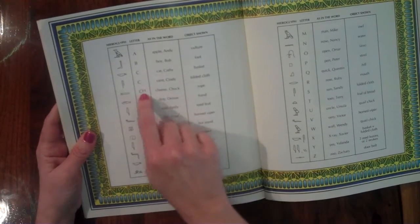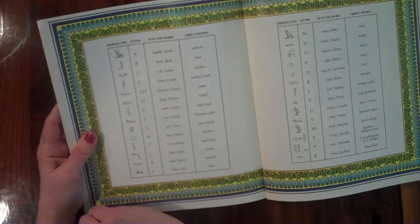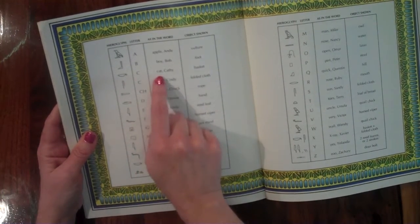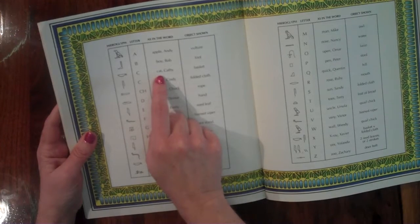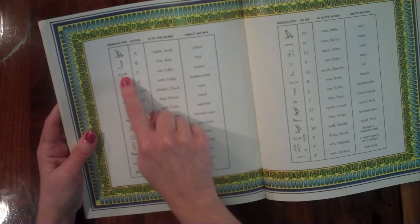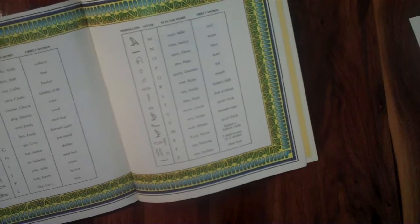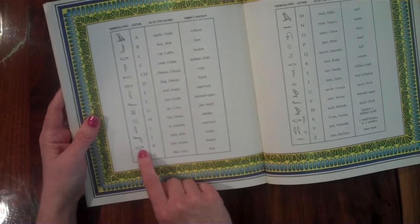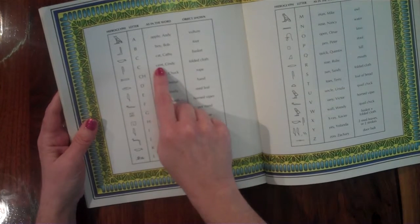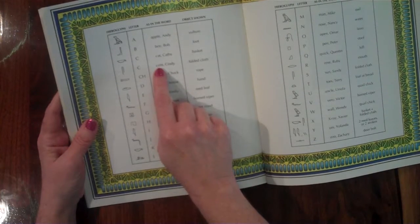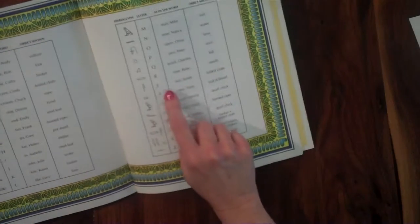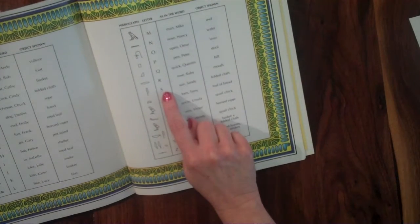Some letters have multiple sounds. So for instance, our letter C can sound like cat or Kathy, it sounds like a K. So in that case it would be the basket, because if you look at the letter K, it is also a basket. However, if it sounds like scent or Cindy, it is a folded cloth, which is the same as the S because that's the sound that it has.